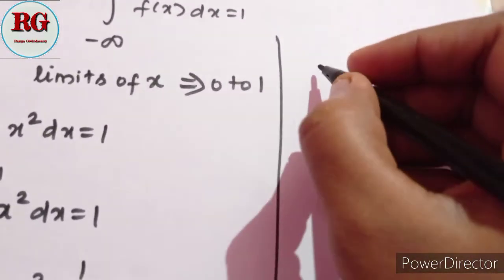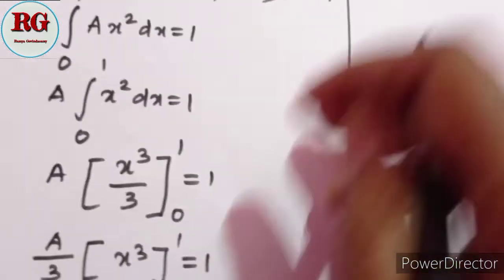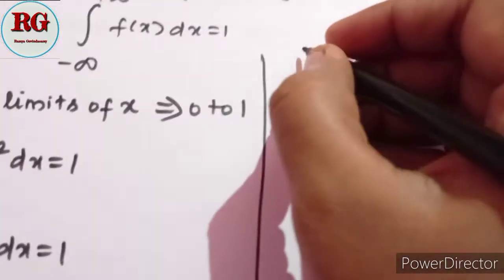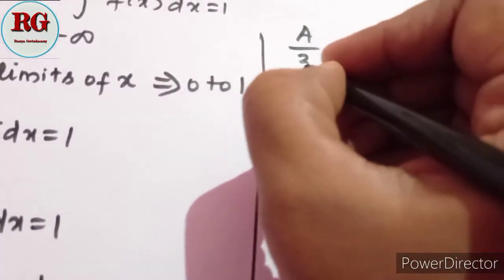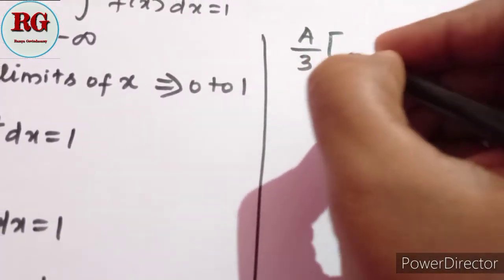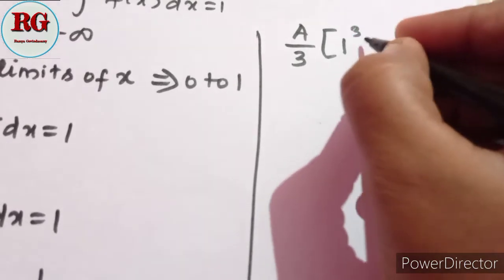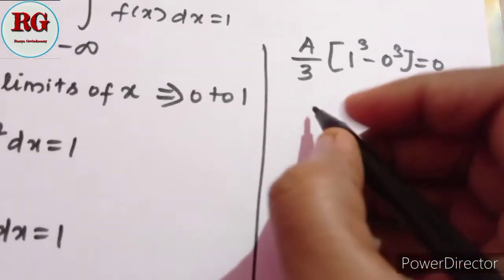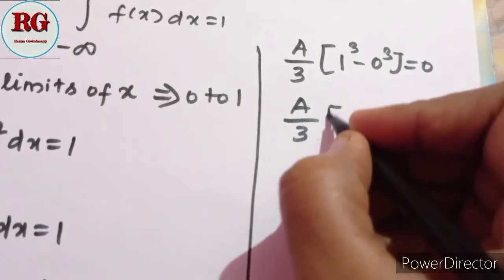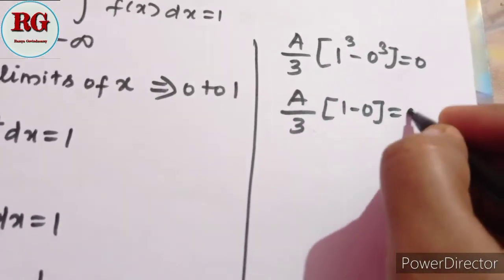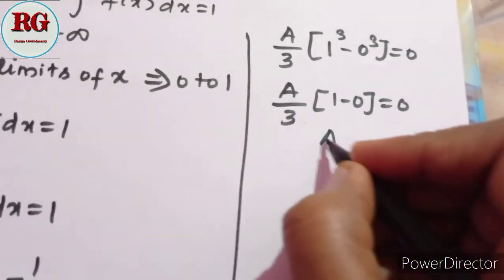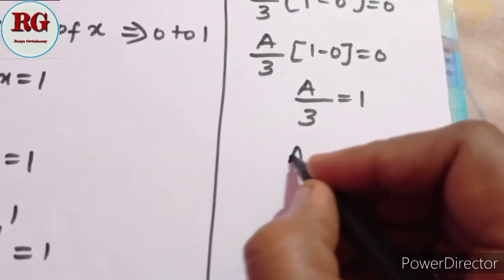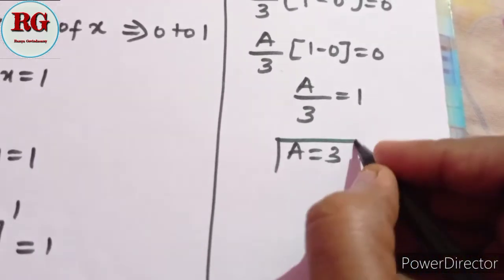The value equals 1. So A by 3 times (1 cube minus 0 cube) equals 1, which gives A by 3 times (1 minus 0) equals 1. Therefore A by 3 equals 1, and A equals 3.